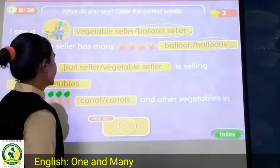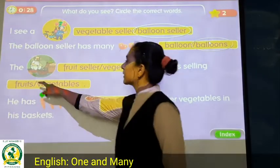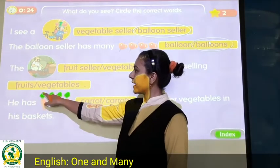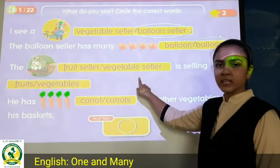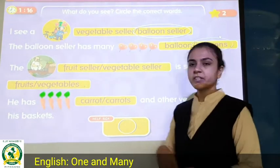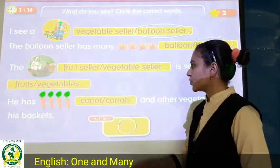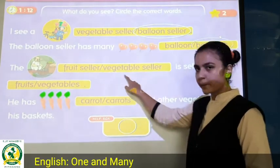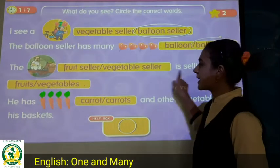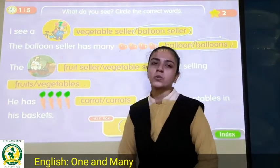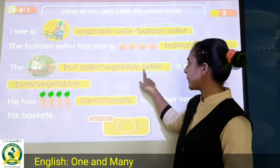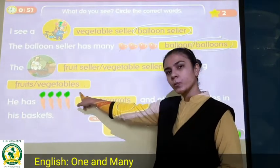Now see the next one — the man is selling vegetables. Yes, he is a vegetable seller. He is also a vegetable seller. So we circle vegetable sellers. Vegetable sellers sell vegetables — that is what they do.